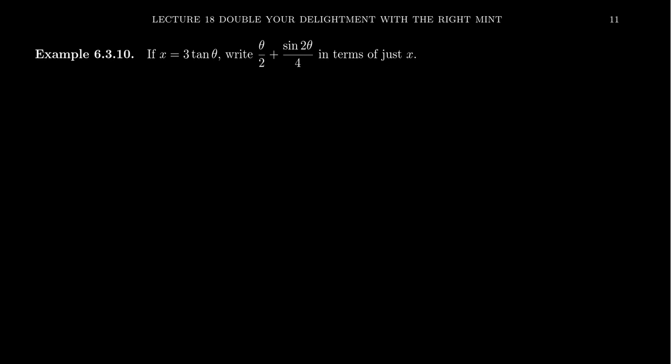In calculus, this type of conversion from algebraic variables to trigonometric variables — or in our video here, the reverse, switching from the trigonometric variable to the algebraic variable — is very common practice, and so it's appropriate to practice this in a trigonometric setting. So how do you write this expression in terms of just the variable x?